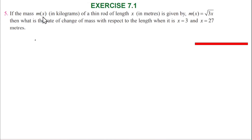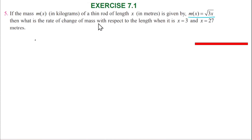If the mass m of x in kilograms of a thin rod of length x in meters is given by m of x is equal to root 3x, then what is the rate of change of mass with respect to the length when x is equal to 3 and x is equal to 27?